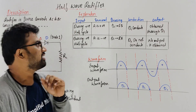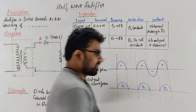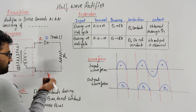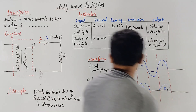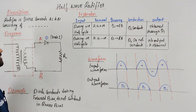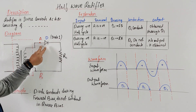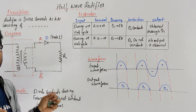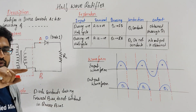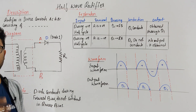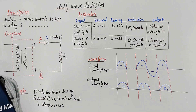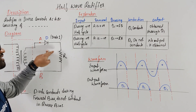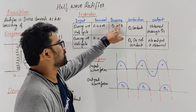During the positive half cycle, terminal A becomes positive. Whenever the positive terminal of the diode is connected to the positive side of the battery, it's called forward bias. The diode always conducts in forward bias and does not conduct in reverse bias. So during the positive half cycle, diode D becomes forward biased and conducts. Unlike the full wave rectifier, only one diode D is required here — no D1 and D2.